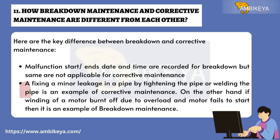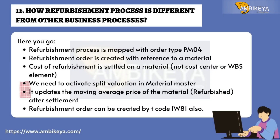Question number eleven: How are breakdown maintenance and corrective maintenance different? Malfunction start and end date and time are recorded for breakdown maintenance but are not applicable for corrective maintenance. For example, fixing a minor leakage in a pipe by tightening or welding is corrective maintenance. If the winding of a motor burns off due to overload and the motor fails to start, that is an example of breakdown maintenance.